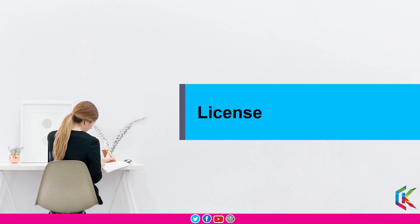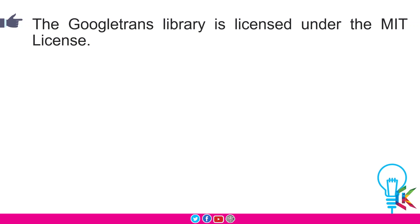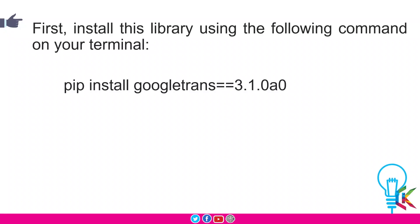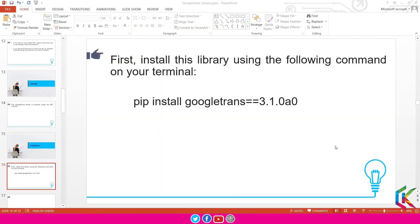The Google Translate library is licensed under the MIT license. Now we are going to install this library. We are going to execute the command to install Google Translate, which is: pip install googletrans==3.1.0a0. By this command we can install this specific version of the Google Translate library on our system.